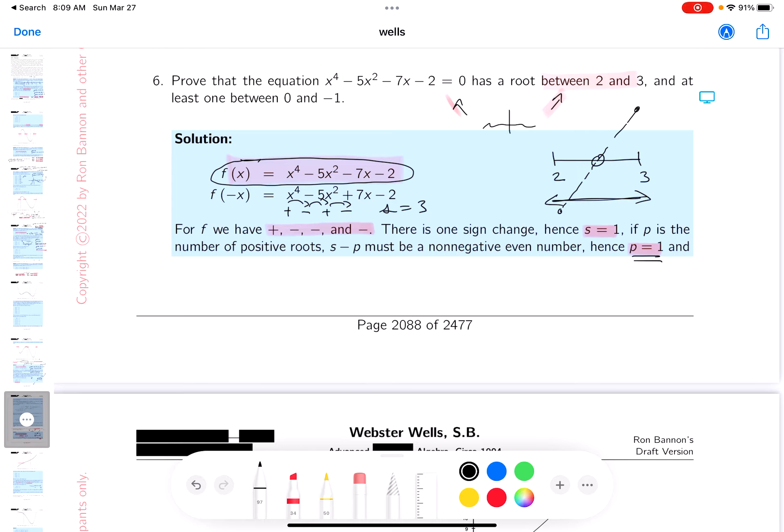Let me show you how to write that down for you. F of minus 1, that's going to be 1 minus 5 plus 7 minus 2. That's definitely a positive number.